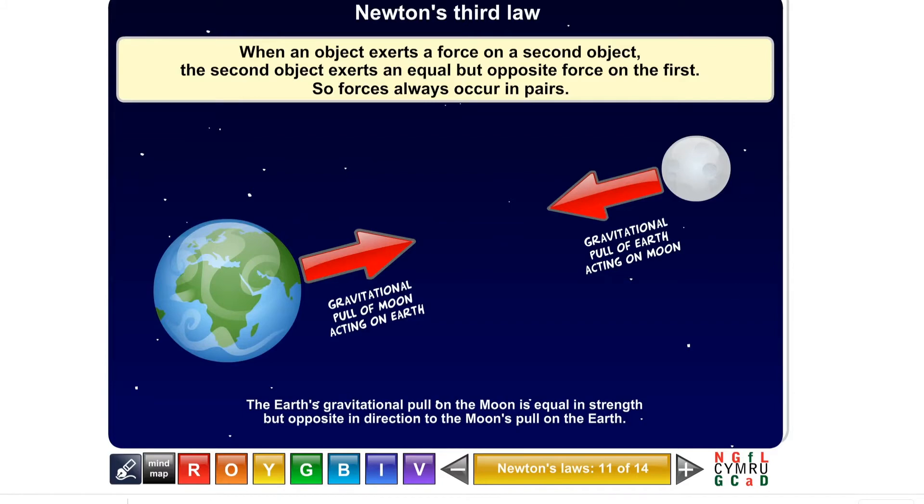Not so obvious between the pull of moon acting on the earth and the pull of earth acting on the moon. Two forces: action and reaction. And that results in the moon being able to orbit around the earth.